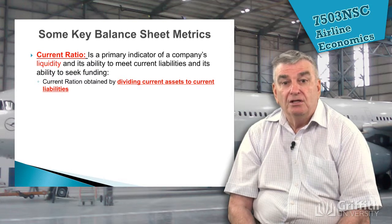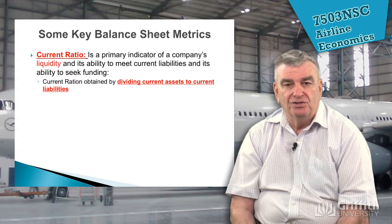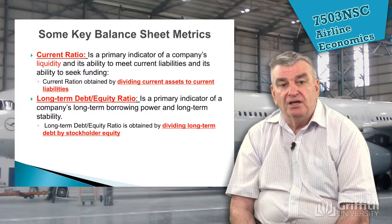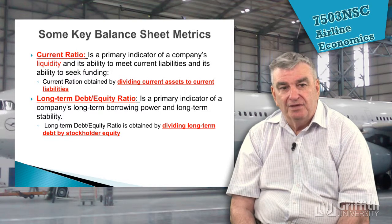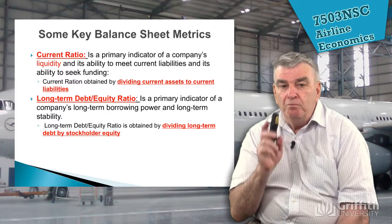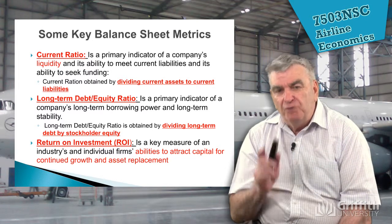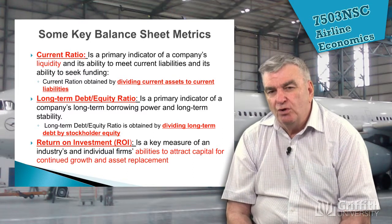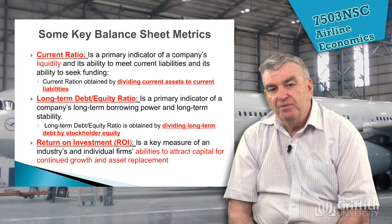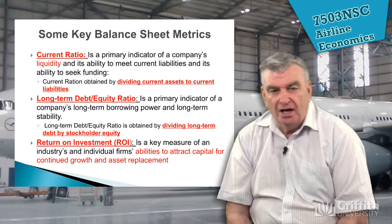We look at the current ratio, which is the indicator of a company's liquidity — how much money it can actually turn into available funds — calculated by dividing current assets by current liabilities. We also look at the long-term debt to equity ratio, a primary indicator of a company's long-term borrowing power: the more debt you have, the harder it is to get money. Then there's return on investment — if we invest money getting assets for the company, what return can we get? Some airlines get far more revenue from a particular asset than others, which comes down to things like productivity of aircraft and people.